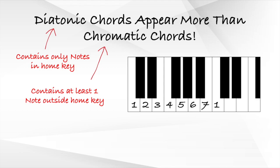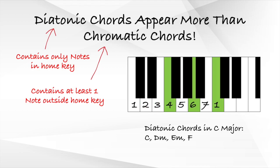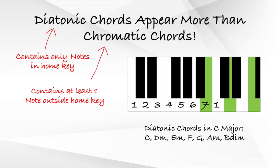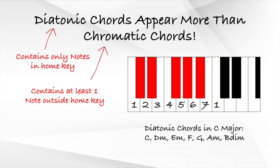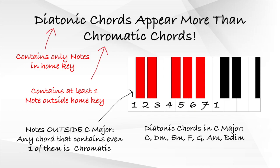From these seven notes, we can make seven possible diatonic chords: C major, D minor, E minor, F major, G major, A minor, and B diminished. On the other hand, there are five notes outside our C major key, and any chord that contains even one of these notes is considered a chromatic chord. Our first six diatonic chords, excluding B diminished, appear much more than any other chromatic chord.